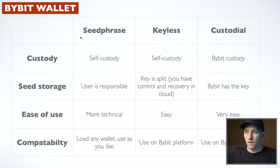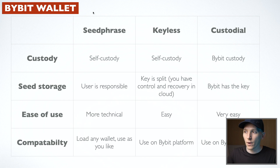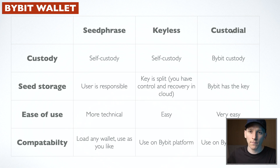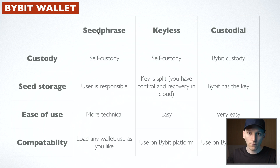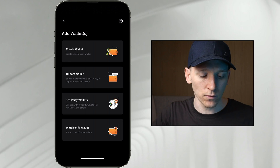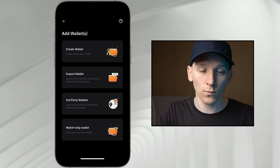Here's the layout of which way you might want to go. Seed phrase is your full control. Keyless is the MPC wallet where the keys are split up and you keep some in the cloud — both of these are self-custodial. Then you have the custodial wallet from Bybit where they keep the keys. Custodial is the easiest type. Keyless may be good because you get self-custody but don't have to write down a seed phrase — you just remember a password. Seed phrase is pure self-custody, more technical, but you have complete control. It's up to you which one you want to use, and you can use all of them at the same time within Bybit Wallet.